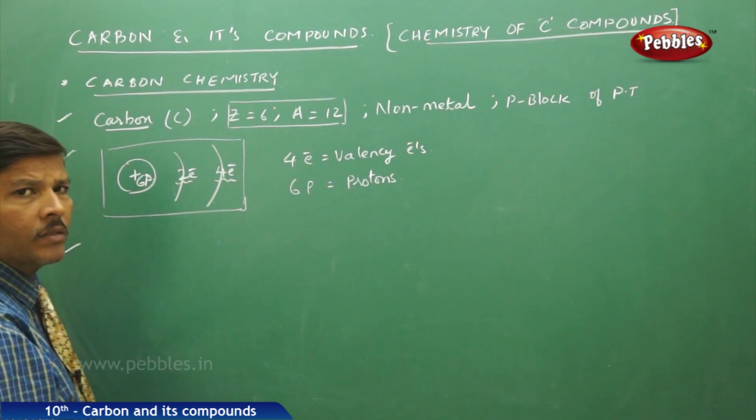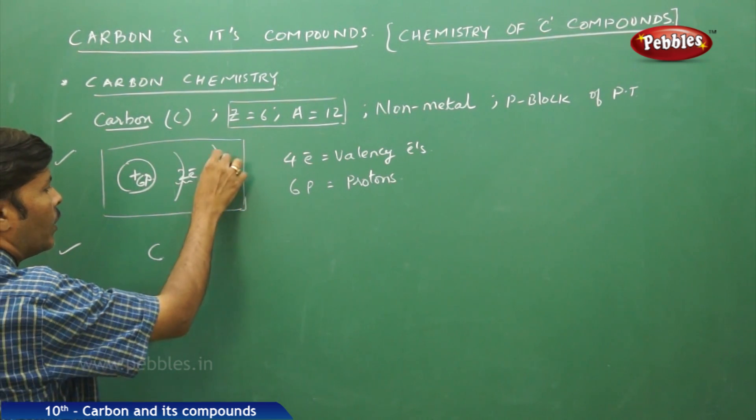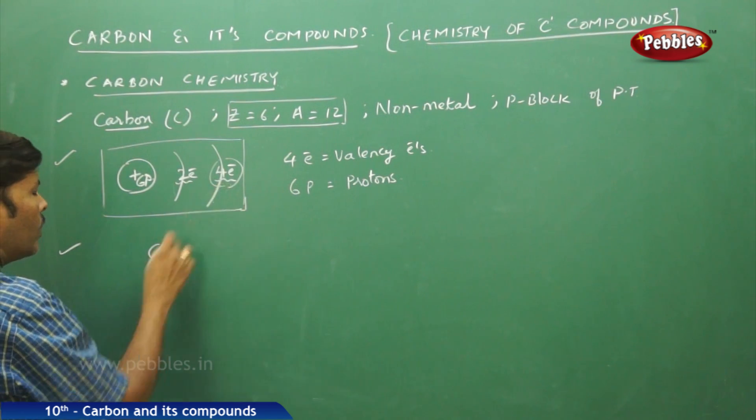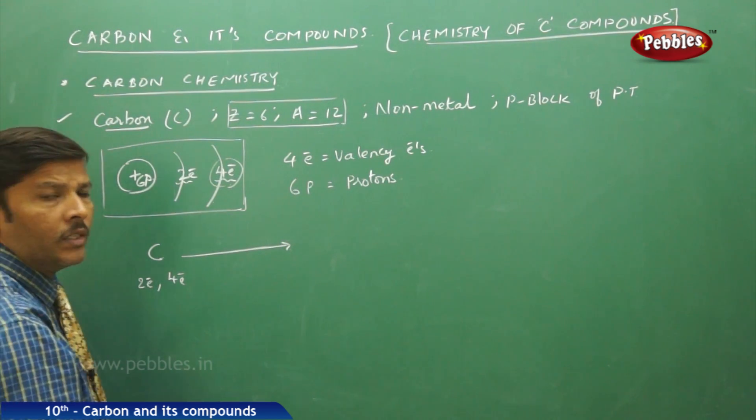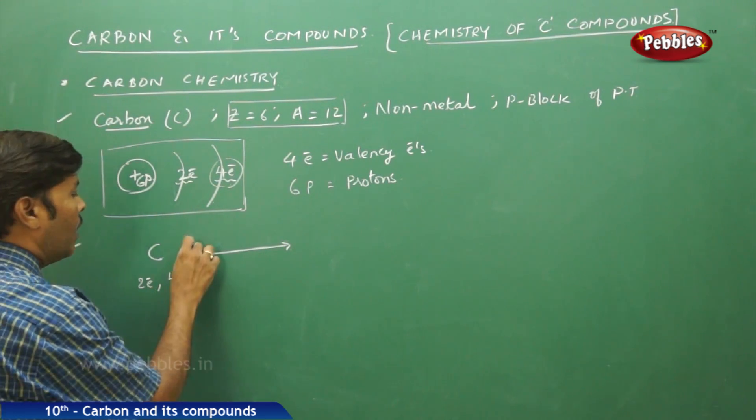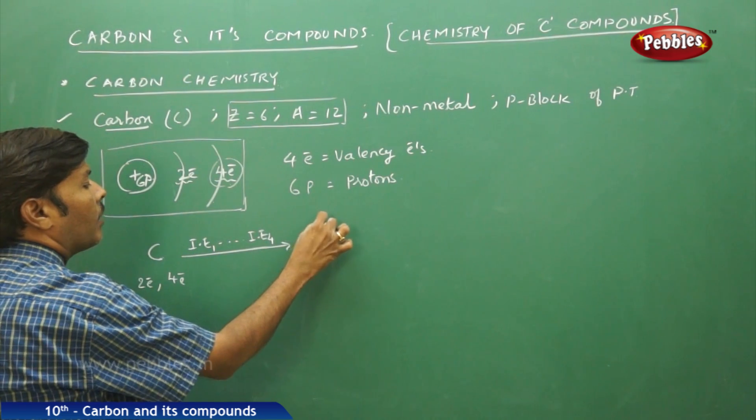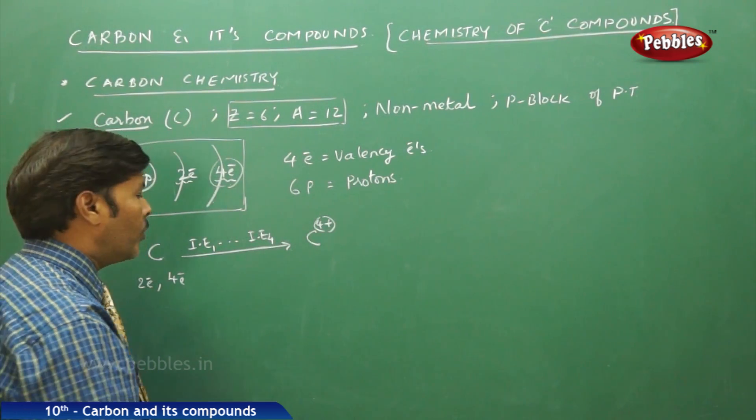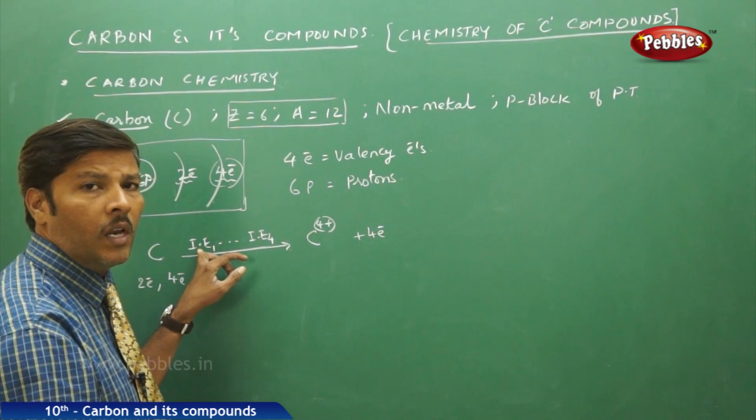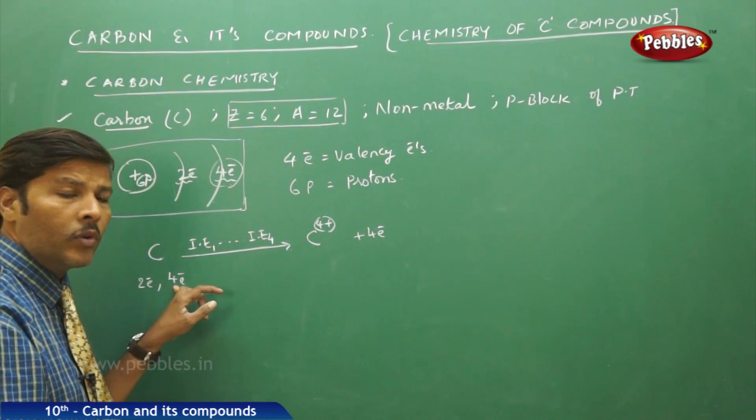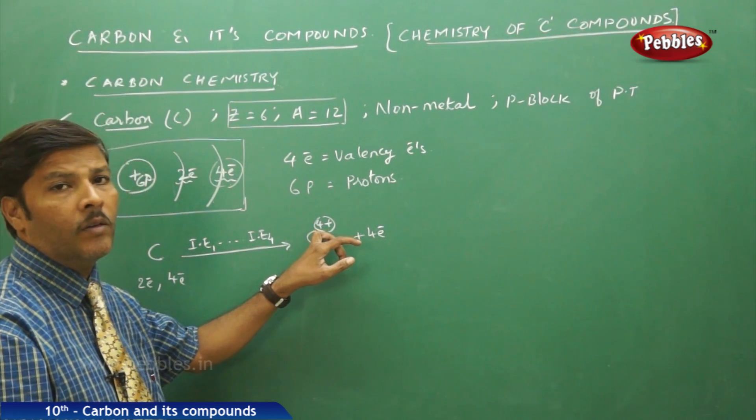If that is the case, if carbon wants to lose all these 4 electrons, if you want to remove 4 electrons from the carbon, you need large amount of energy. You need almost 4 ionization energies. Then only this carbon can acquire 4 units of positive charge with the loss of 4 electrons. That is quite difficult because until and unless you supply large amount of energy to remove all the 4 valence electrons present in the carbon, the carbon cannot lose all the 4 electrons and it cannot form 4 positive charges.